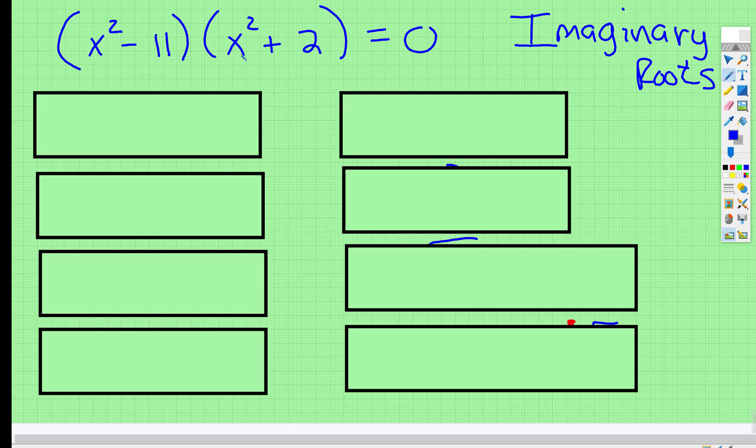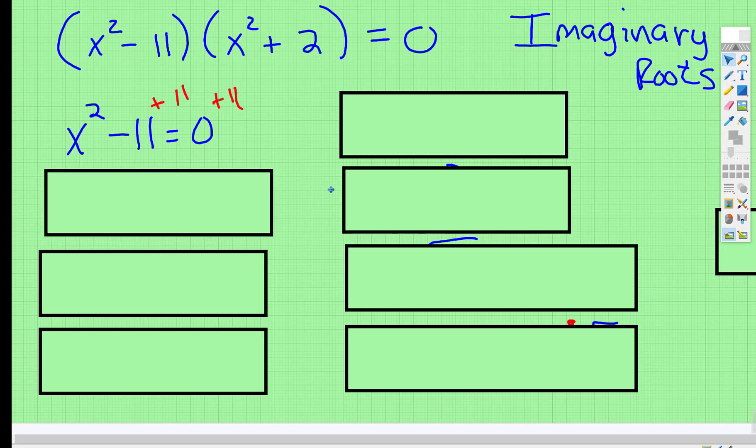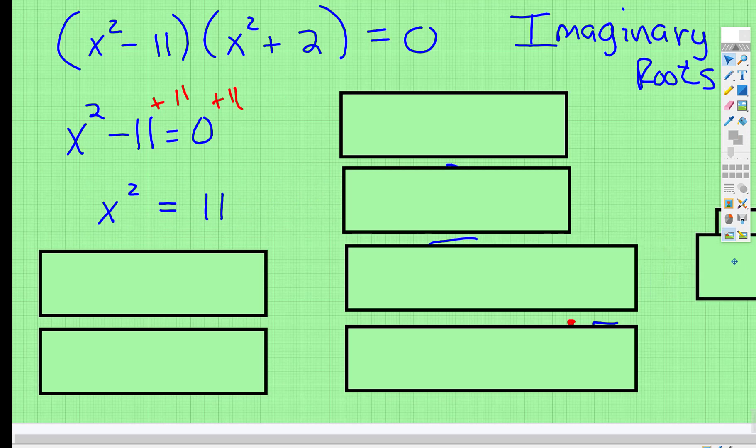Well to find these factors, we're going to set x squared subtract 11 equal to 0. So then we're going to add 11 to both sides, and then we're going to take the square root, and when you take the square root, you have a positive and negative.